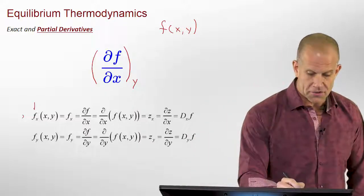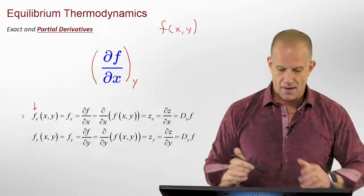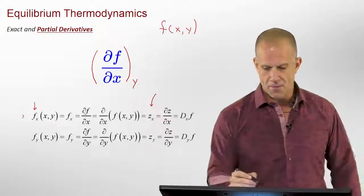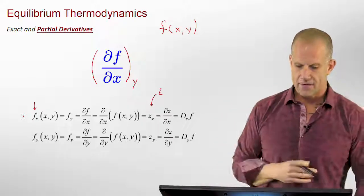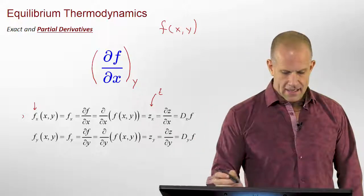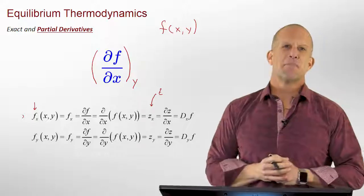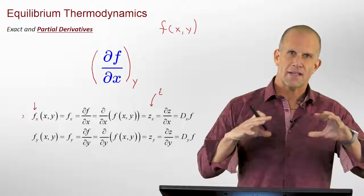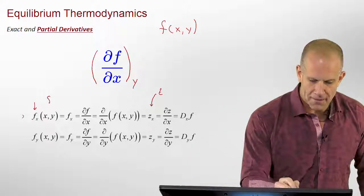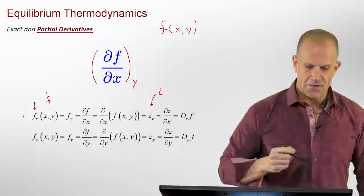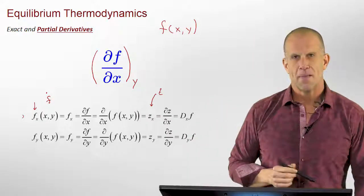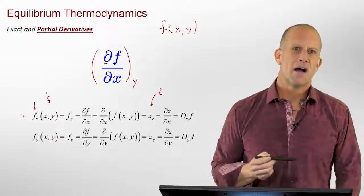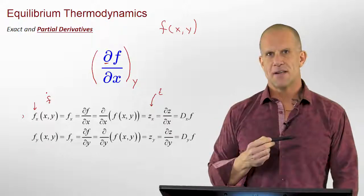Sometimes instead of just using the function as a function of x and y, we'll often use some other variable. If we're using two variables x and y, the most common thing is to use z as a variable. There are several common nomenclatures that can be confusing — for example, another one that got popularized is to use a dot on top for a derivative. But this symbol is now pretty ubiquitously used as a partial derivative.